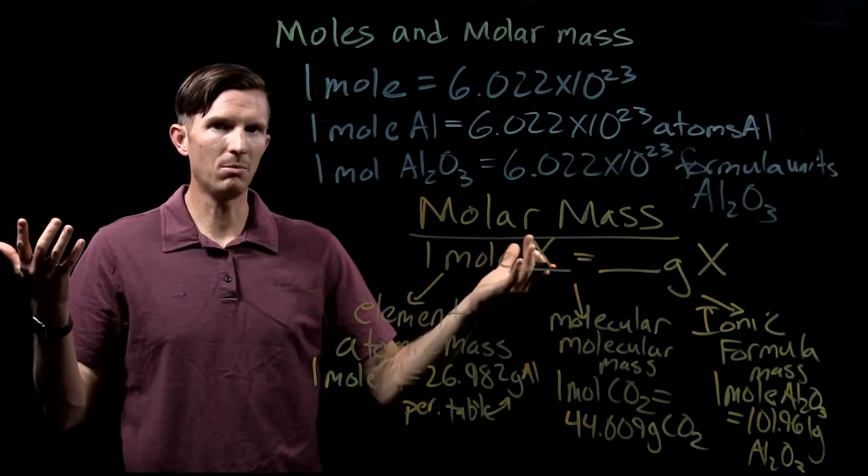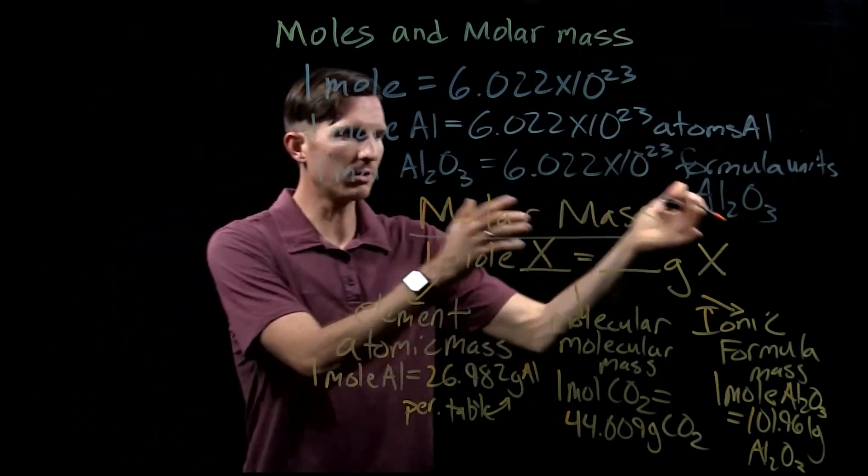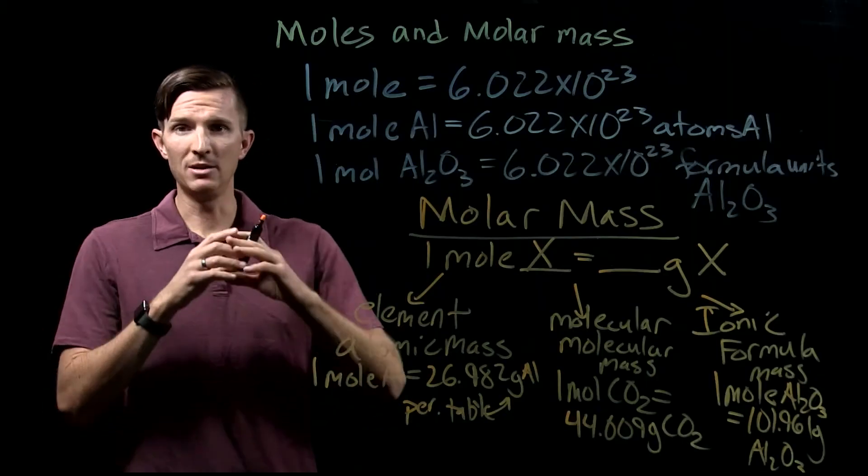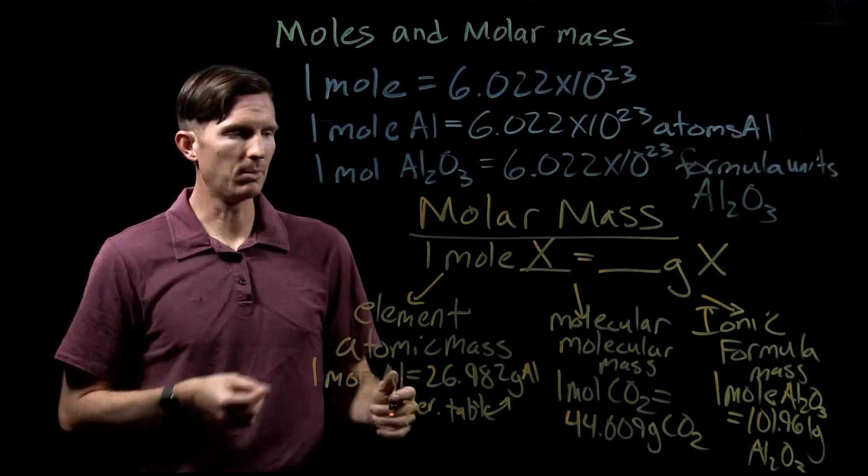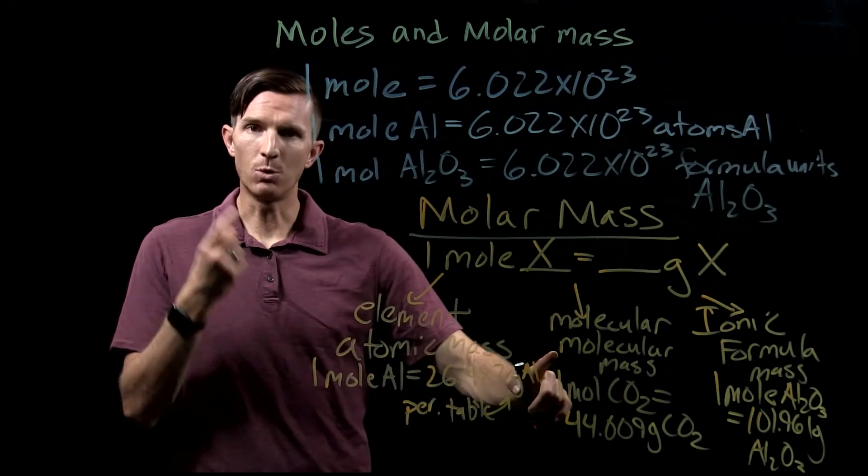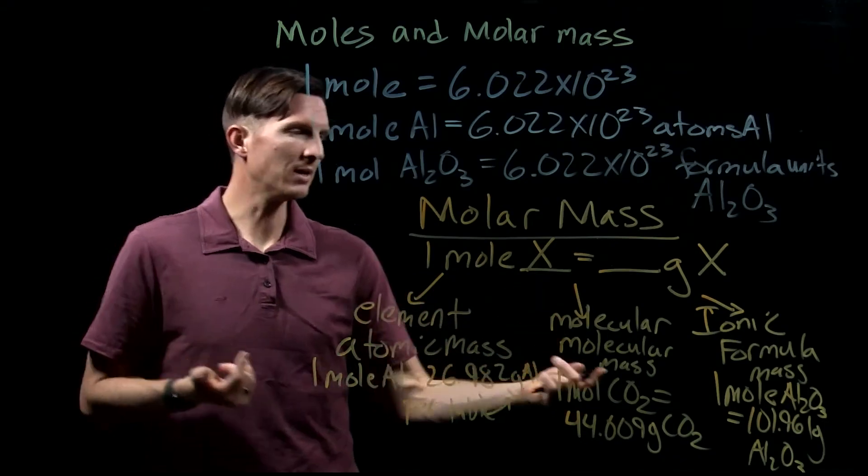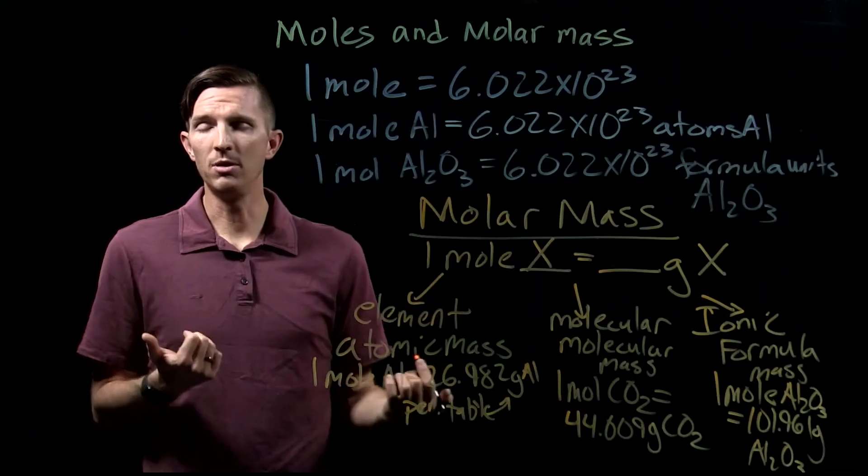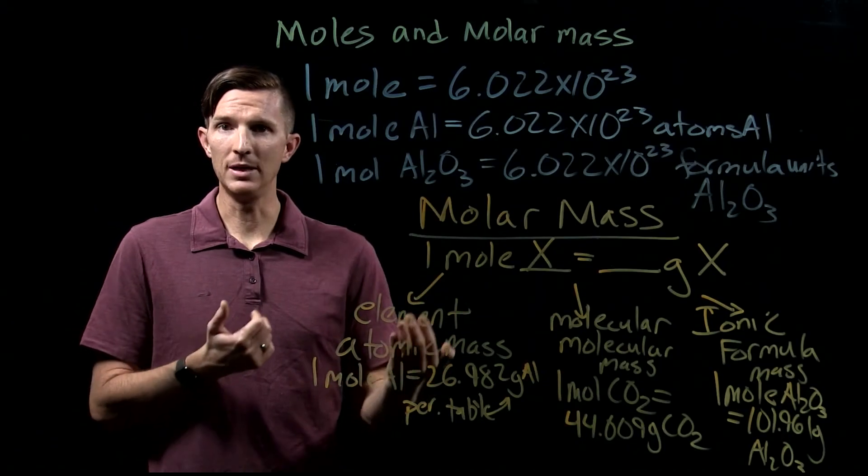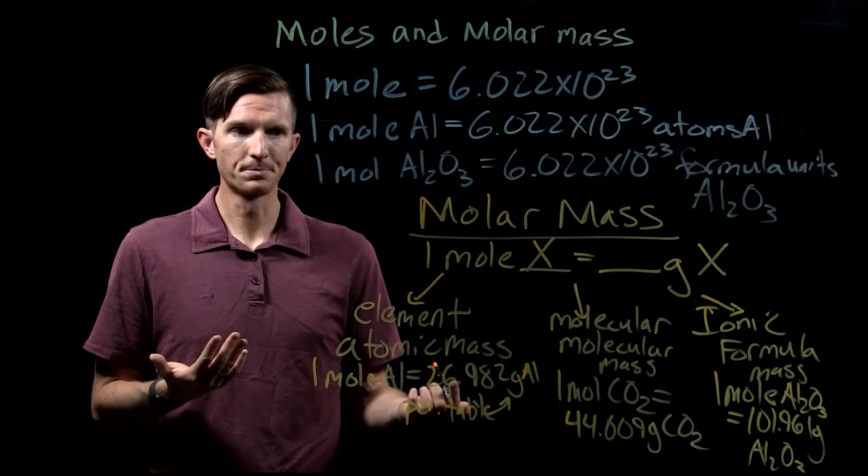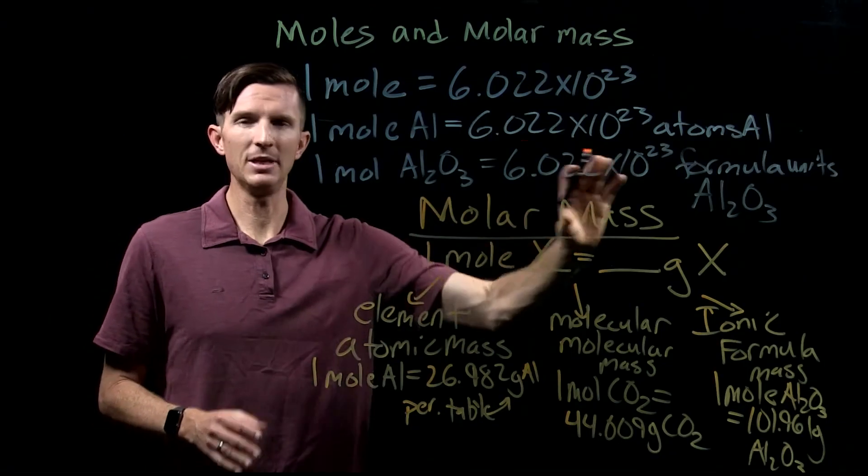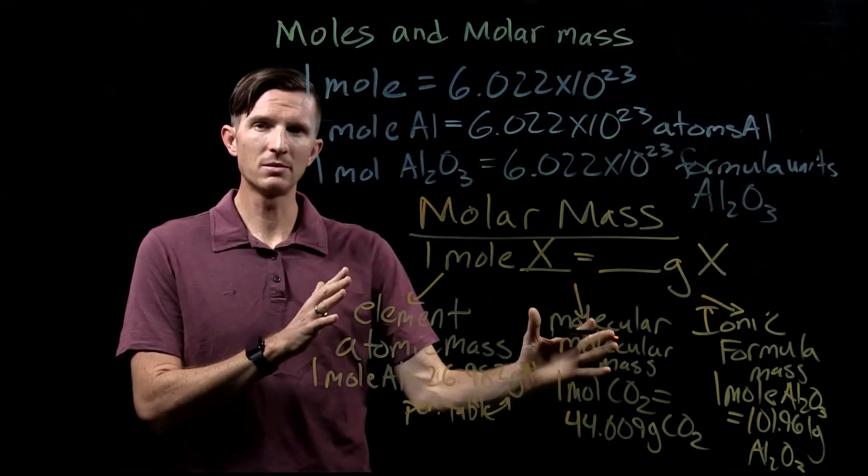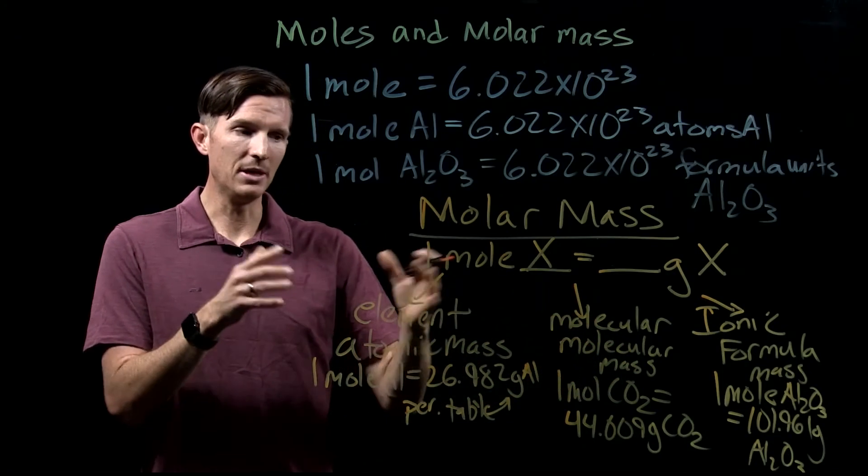We can more broadly talk about the molar mass of an element, a molecule, or an ionic compound and just say that's a molar mass. But if we say molecular mass, it's the mass for one molecule. If I say formula mass, that would be the mass for one formula unit—the lowest whole number ratio of the ions within an ionic compound. This helps us see the relationship between molar mass and the number of pieces.